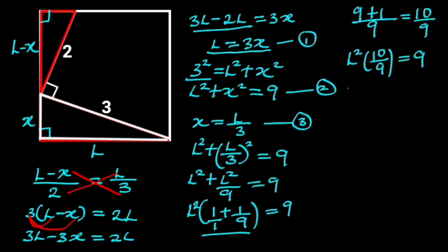Next, we divide through by 10 over 9. Doing so will give us L squared is equal to 9 divided by 10 over 9, which can be written as L squared is equal to 9 times 9 over 10. 9 times 9 is 81, so we have 81 over 10. And 81 divided by 10 is 8.1.